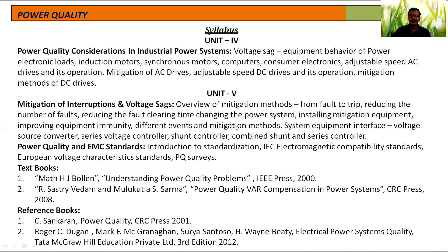In the fifth unit, we will discuss mitigation techniques for power quality improvement — mitigation of interruptions and voltage sags. Overview of mitigation methods: number of faults, fault clearing time, etc. Methods related to mitigation of interruption and voltage sag require equipment such as system equipment interface, voltage source converter, series voltage controller, shunt controller, combined shunt and series control. The fifth unit also covers power quality standards — power quality and EMC (electromagnetic compatibility) standards, IEC electromagnetic compatibility standards, and European voltage characteristics standards.